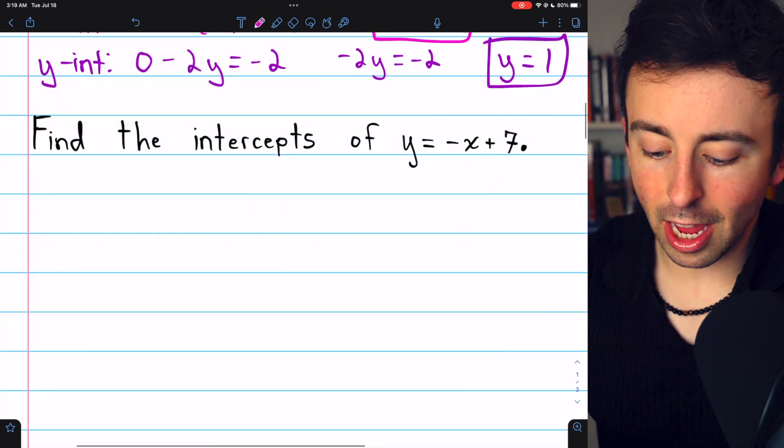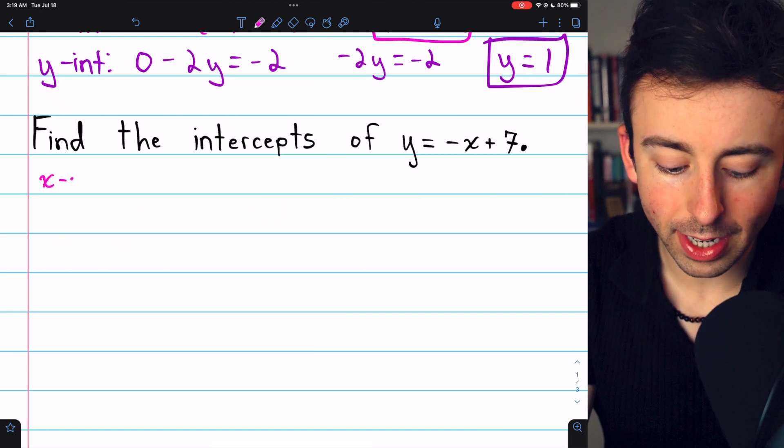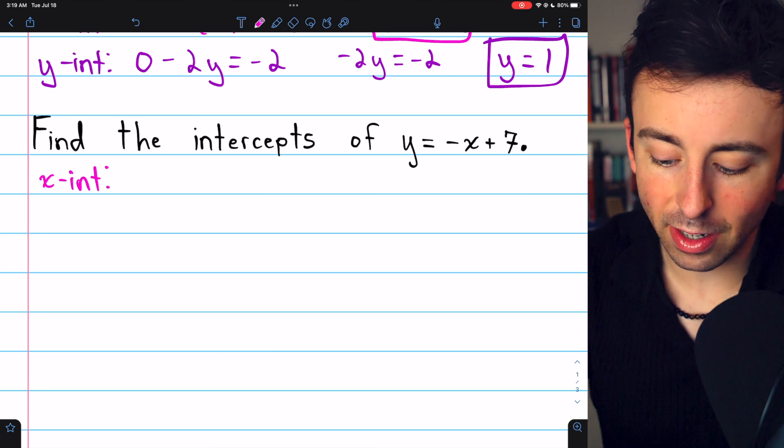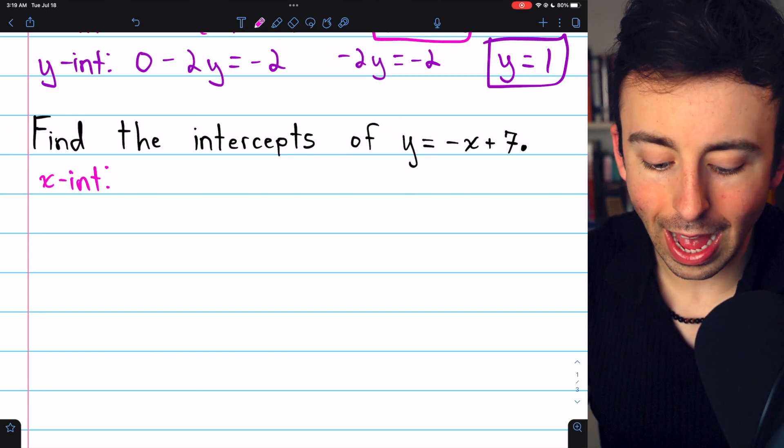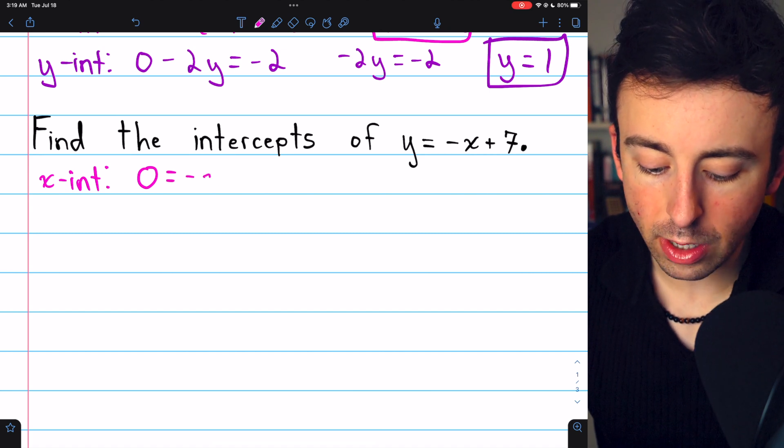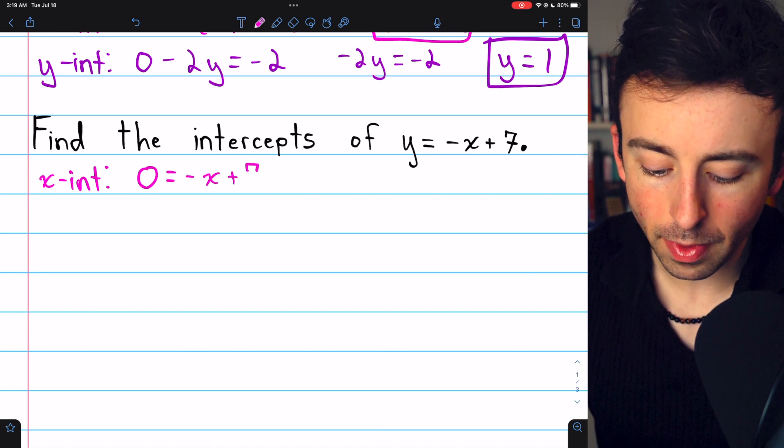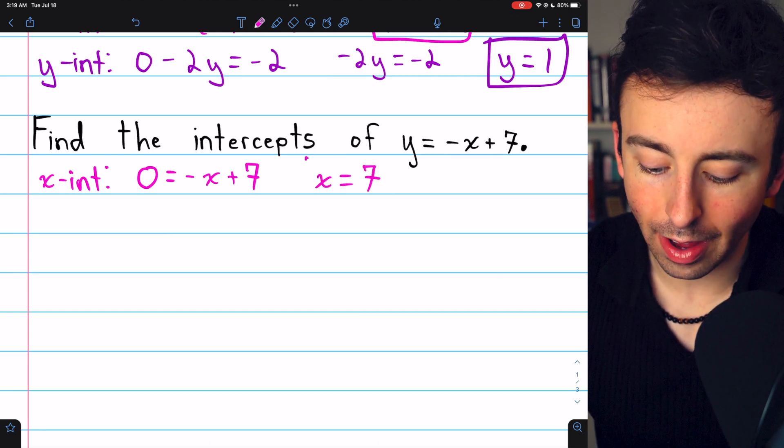Next example: find the intercepts of y equals negative x plus 7. Again, we begin with the x-intercept. Set y equal to 0, and then solve for x. Setting y equal to 0, we have 0 equals negative x plus 7, and then adding x to both sides gives us x equals 7, and that's the x-intercept.